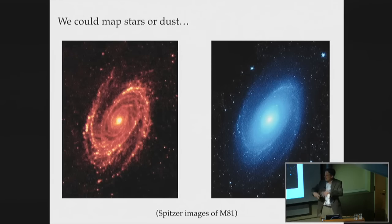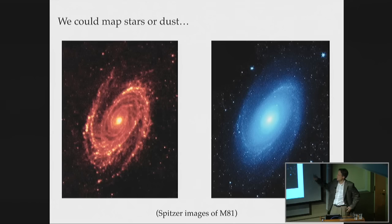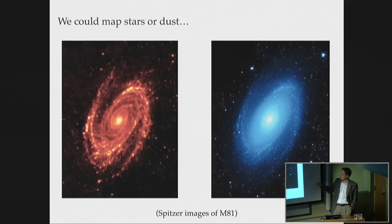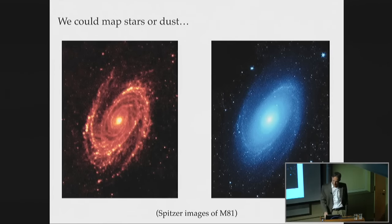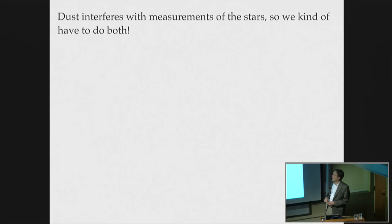We want to map out our Milky Way, and we could do it with stars, dust, or even gas. Here are some images from the Spitzer Space Telescope — this is M81 as we usually see it in stars, and this is the dust in the galaxy. The dust is clumpier; it tends to come in clumpy clouds. The stellar distribution is a little smoother. Dust interferes with the measurements of stars, and stars help with measurements of dust, so you really have to do both — they're two sides of the same coin.